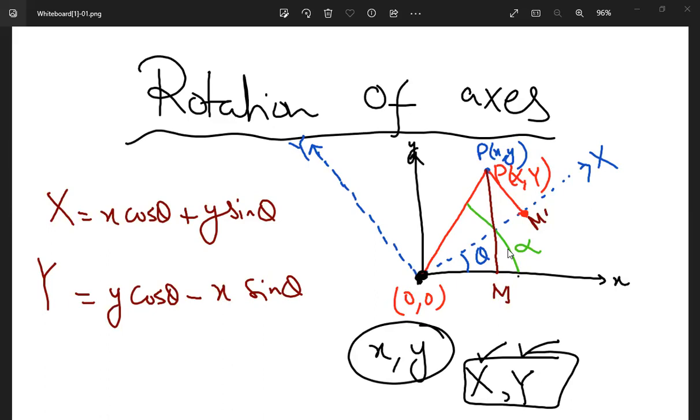Rotation is basically a mapping from an old system to the new system. The old system are small x and small y, and the new rotated system is X and Y in uppercase.